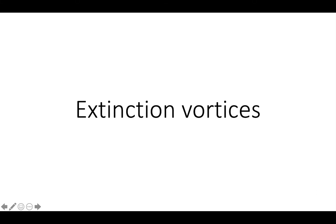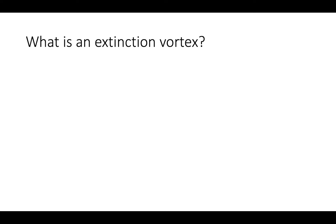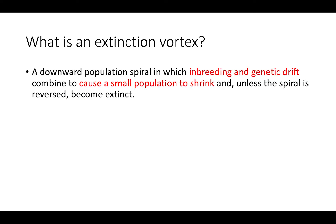This video is going to be about extinction vortices. An extinction vortex is a downward population spiral in which inbreeding and genetic drift have combined to cause what was already a small population to shrink even further, and unless that spiral is reversed somehow, they will eventually become extinct.